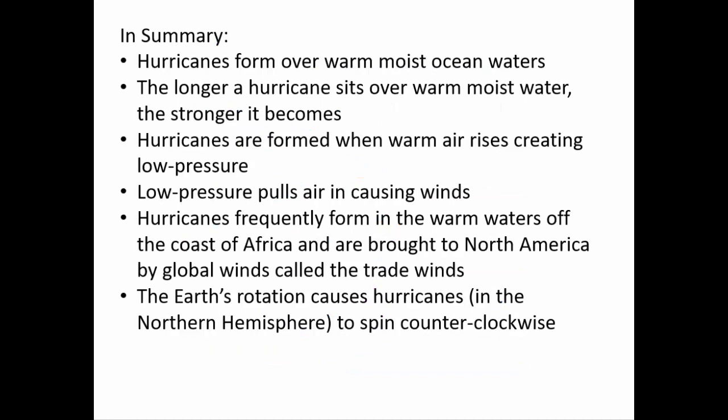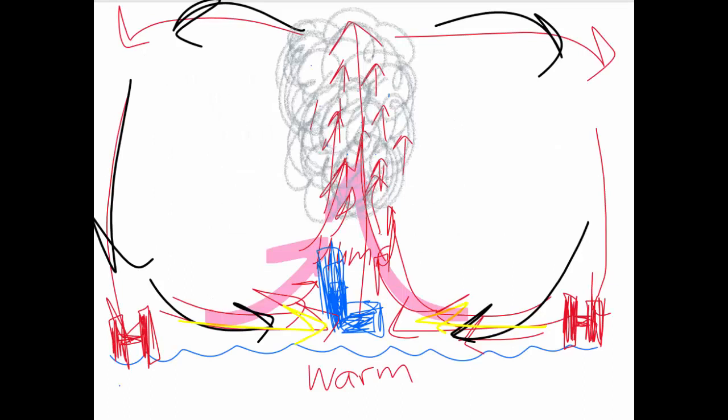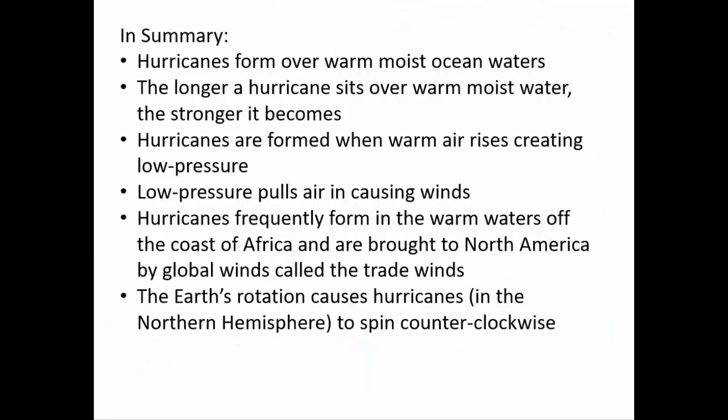In summary, hurricanes form over warm moist ocean waters. The longer a hurricane sits over that water the stronger it becomes. Hurricanes are formed when warm air rises creating low pressure. We have this low pressure right here and it's going to pull that air in. That air being pulled in is those intense winds that we measure in those category ratings. Hurricanes frequently form in the warm waters off the coast of Africa or sometimes in the Gulf of Mexico and are brought to North America by global winds called the trade winds. The earth's rotation causes hurricanes in the northern hemisphere to spin in a counterclockwise direction.